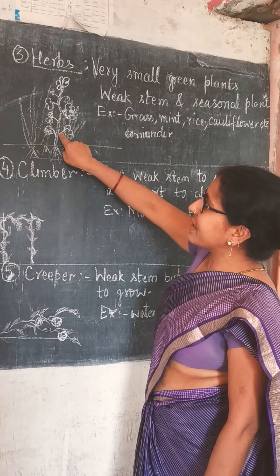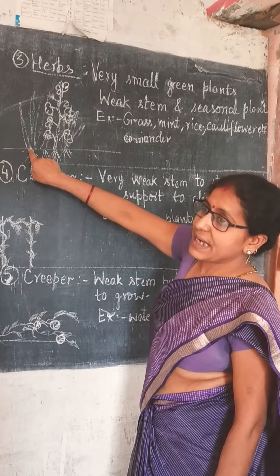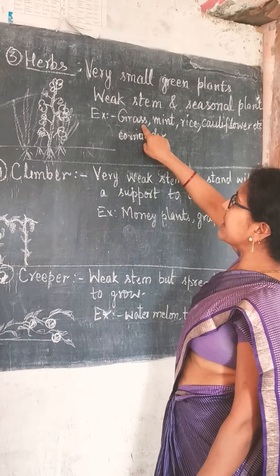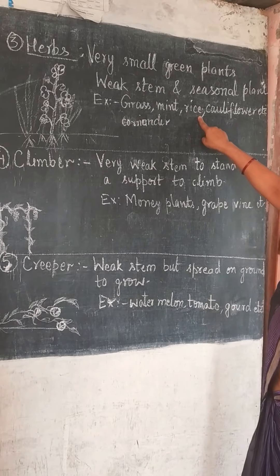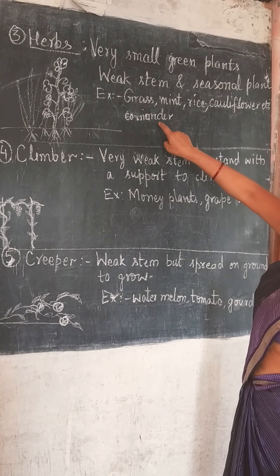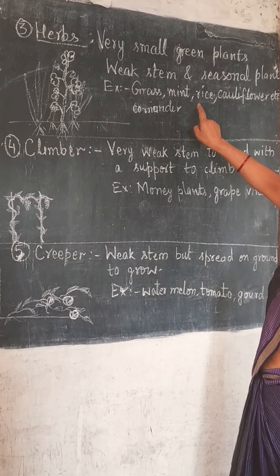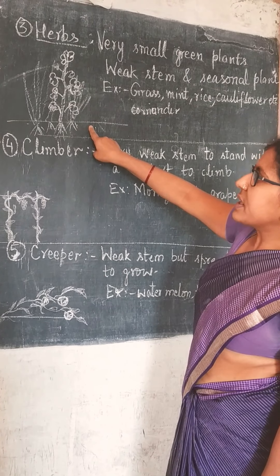Herbs are small green plants. Grass is also a type of herb. For example - grass, mint यानि पुदीना, rice यानि चावल, cauliflower यानि फूल गोभी, coriander, brinjal, etc. Many of our vegetables and food crops come from herbs.